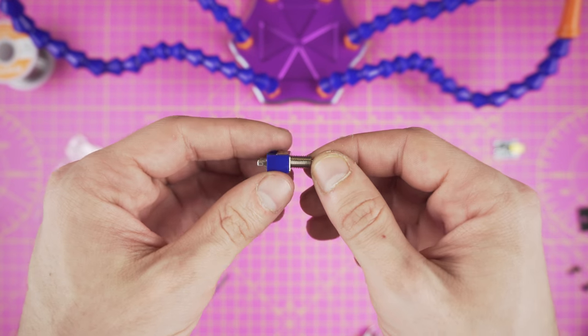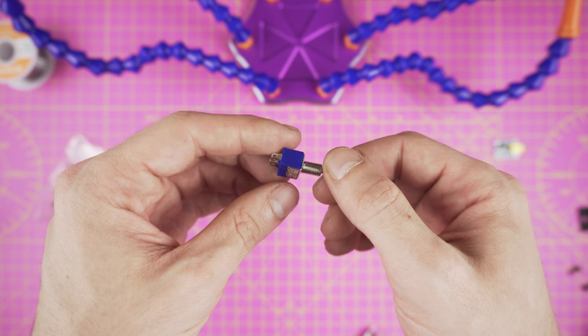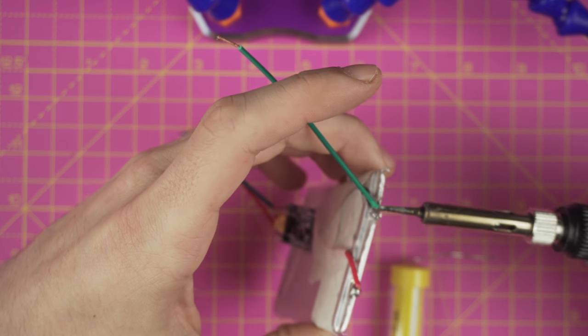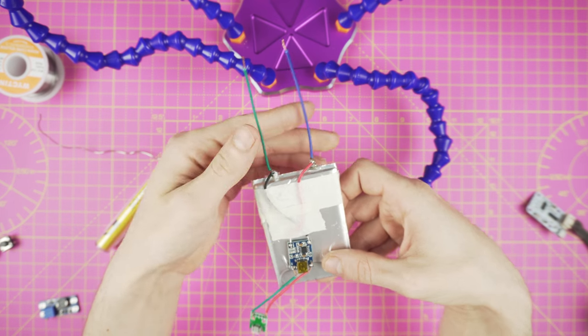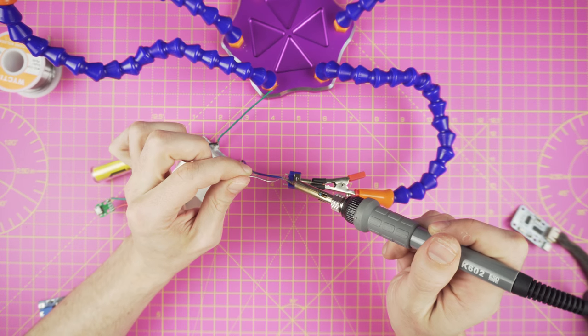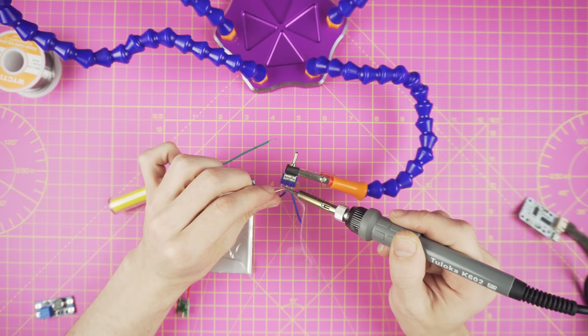Now let's add the switch. I used a 3 position mini toggle switch, which you can find very cheap on Amazon. First add 2 wires to the positive and negative pin on the battery. Solder them in place and it should look like this. Now solder the positive wire to the middle pin of the switch. Add another piece of wire to the right pin.